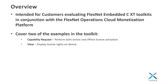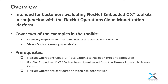I will be covering two of the examples in the toolkit. The first is the capability request example, which can be used for both online and offline license activation. The second is the view example, which displays the license rights on the device.